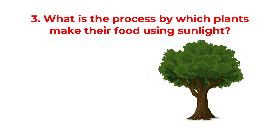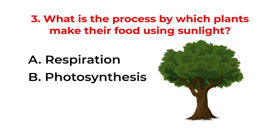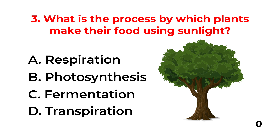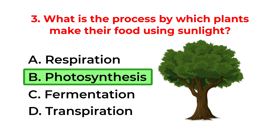What is the process by which plants make their own food using sunlight? A. Respiration. B. Photosynthesis. C. Fermentation. D. Transpiration. The correct answer is option B: Photosynthesis.